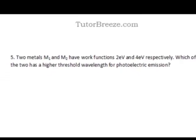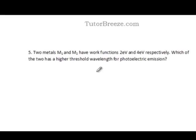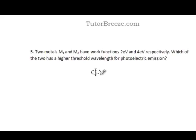The work function of the metal is given by phi nought, which can be written as h times nu nought, where h is Planck's constant and nu nought is the threshold frequency.